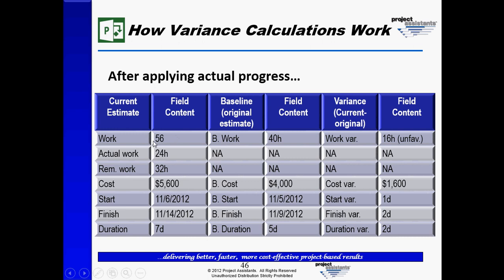In this case, it's a forecasted variance because the task is still in progress. This is now an estimate at completion, but if this estimate holds true, we will in fact end up with an unfavorable variance. This also impacts the cost. The original baseline cost of $4,000 has now been increased to $5,600, generating an unfavorable cost variance of $1,600.